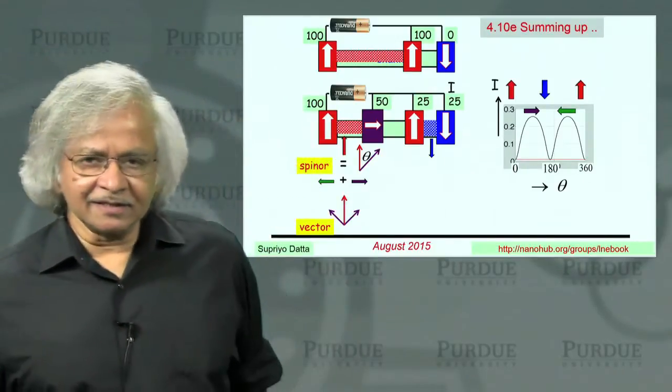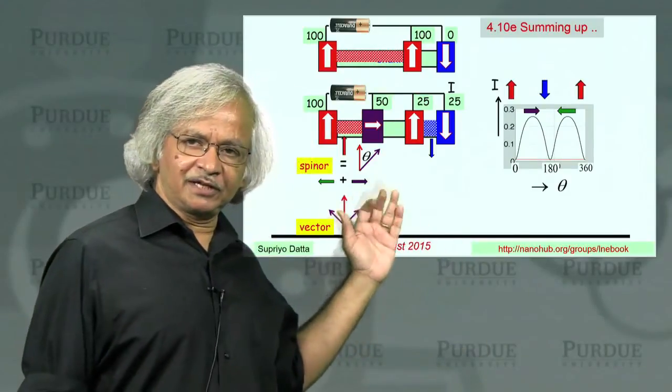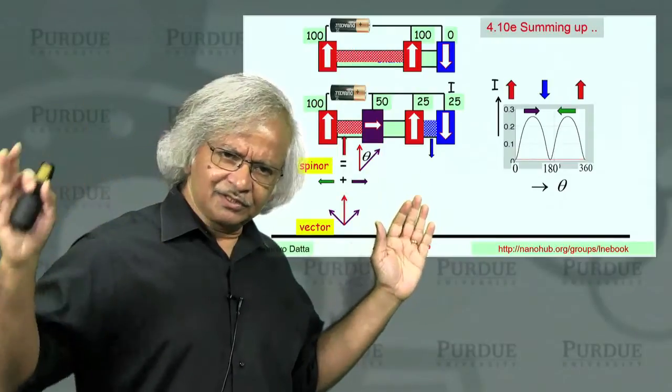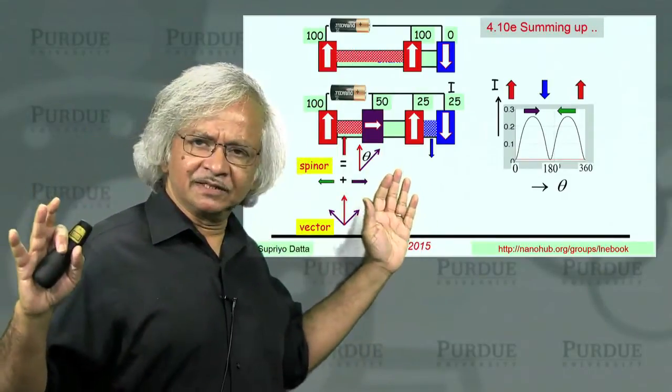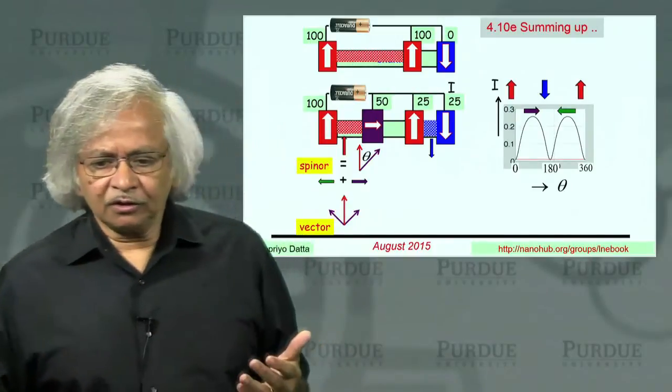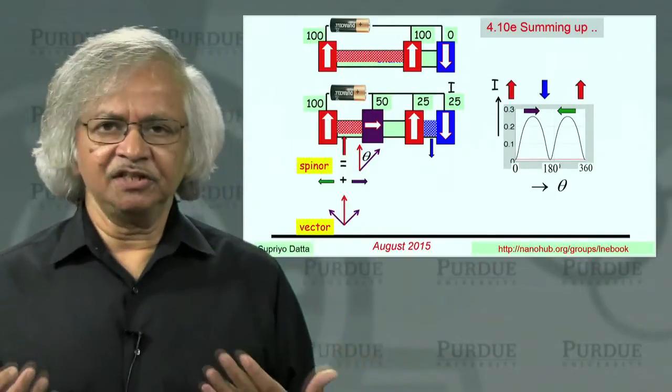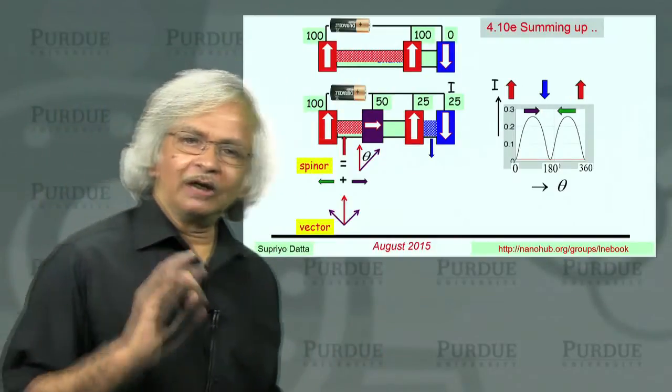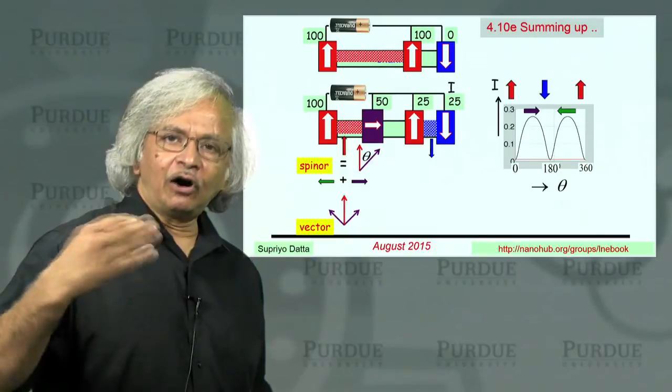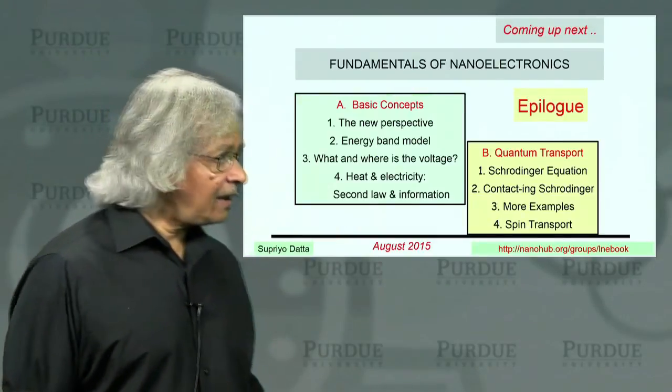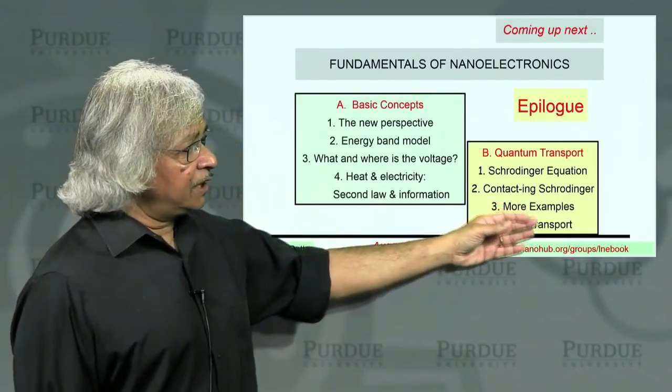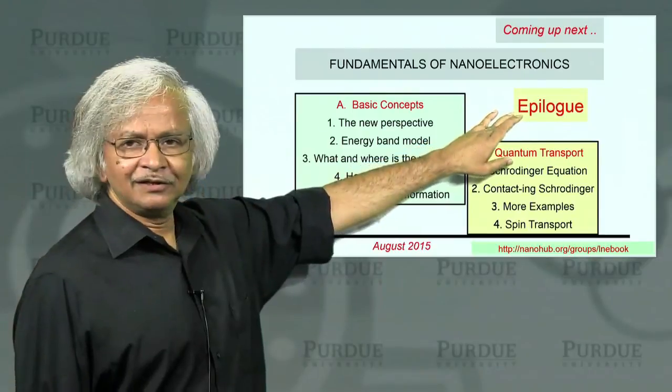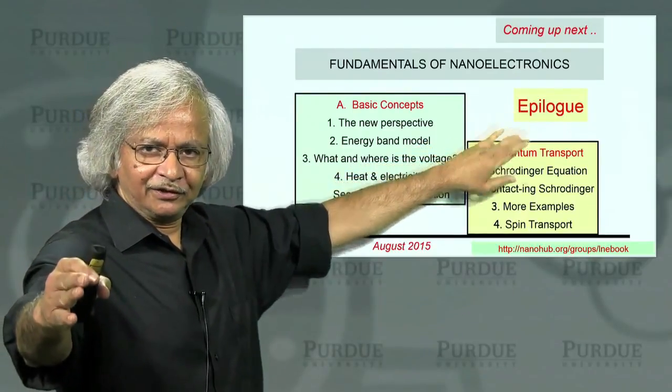What I did in this unit then is used these spin transport experiments with a dual purpose in mind. One was to introduce you to these new developments in this field, but also to show how you can use it with the NEGF method and how it gives you insight into the nature of quantum transport and what off-diagonal elements mean. Well, with that, I guess we are at the end of our two-part course. What remains is this short epilogue after this. Thank you.